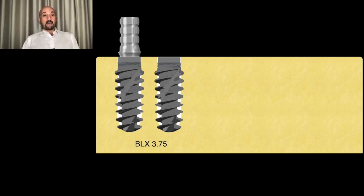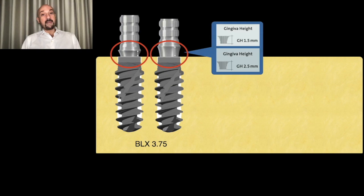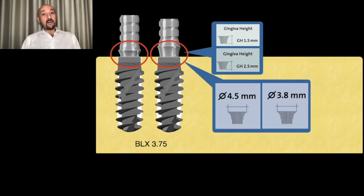Here we have temporary abutments with different gingival heights, as opposed to the previous line where we only had one millimeter. Now it can go up to 2.5 millimeters in gingival height, and you can choose the final platform width: 3.8 or 4.5 millimeters.